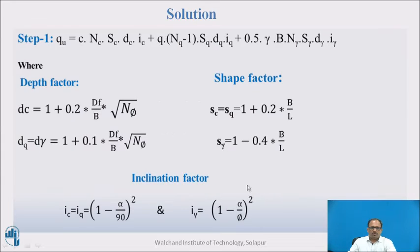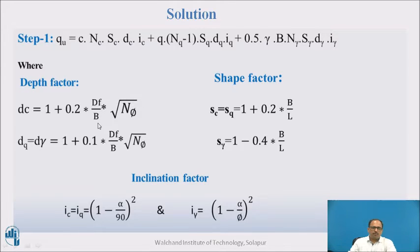Now calculate the shape factors, depth factors, and inclination factors. The depth factor Dc = 1 + 0.2·(Df/B)·√Nφ, where Nφ = tan²(45 + φ/2). Dq and Dγ use the formula: 1 + 0.1·(Df/B)·√Nφ. The shape factors for rectangular footing are: Sc = Sq = 1 + 0.2·(B/L), and Sγ = 1 − 0.4·(B/L).